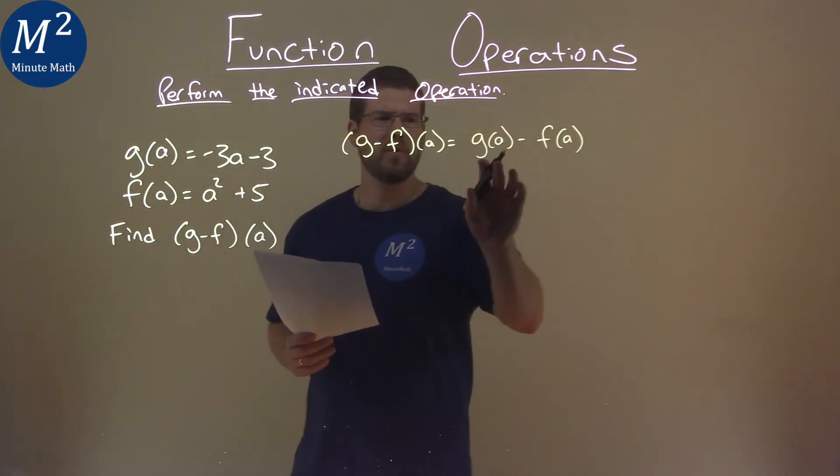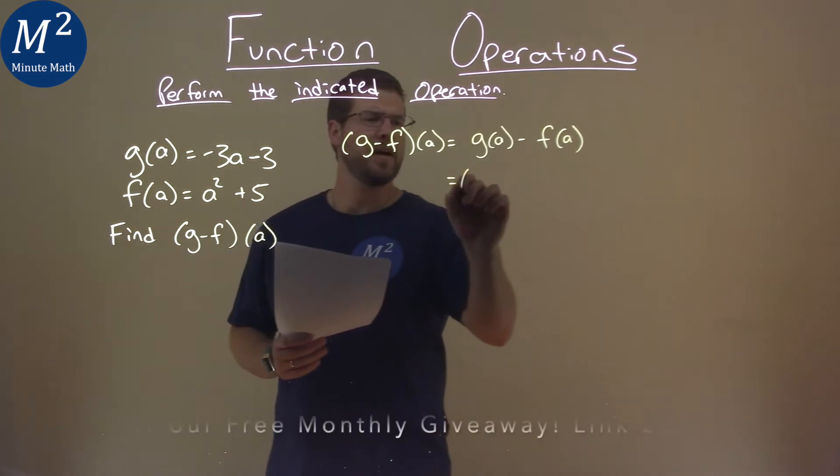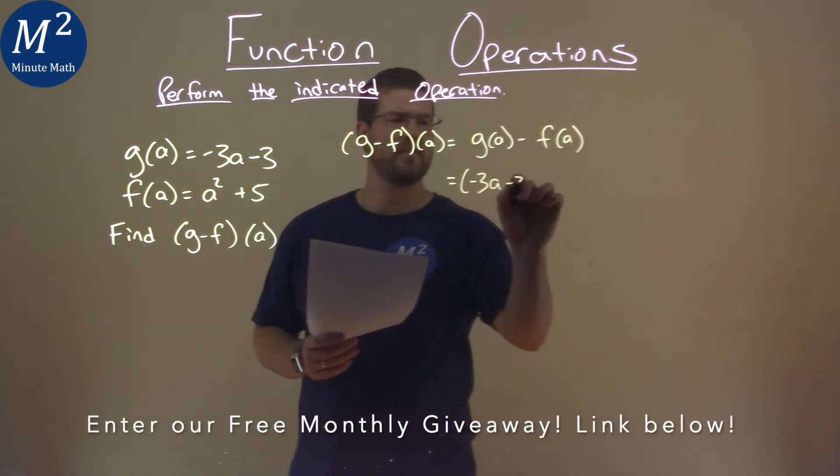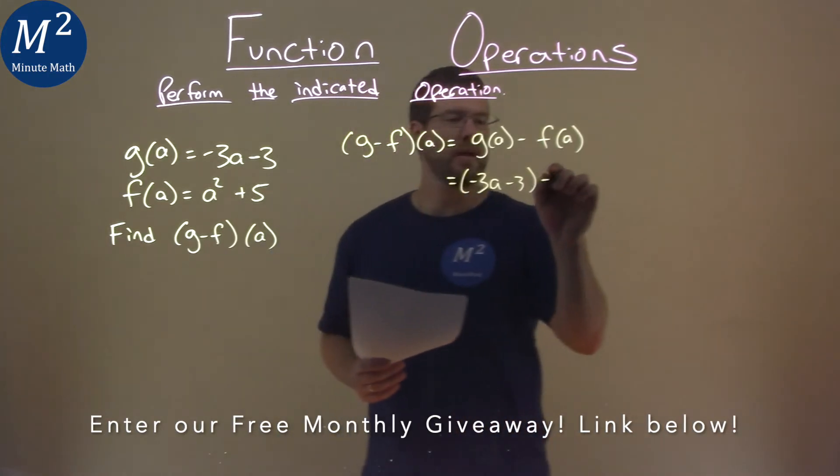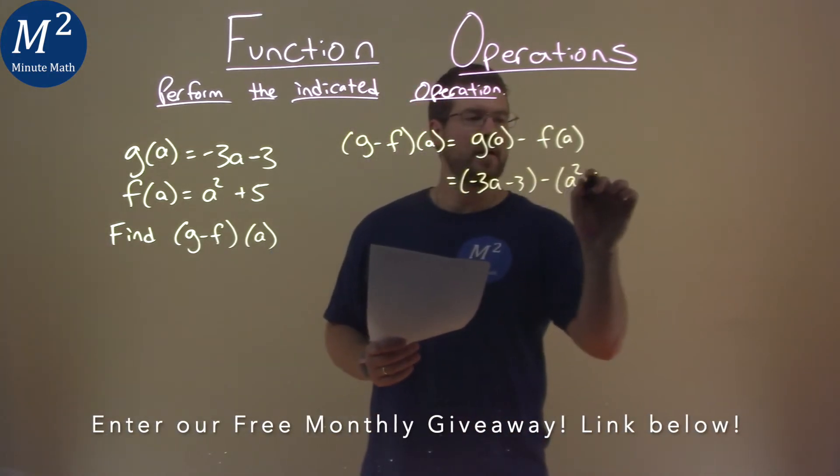So now, what's g of a? Well, we were given that in the beginning, that's negative 3a minus 3. f of a, again we were given, is a squared plus 5.